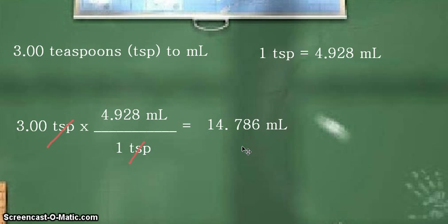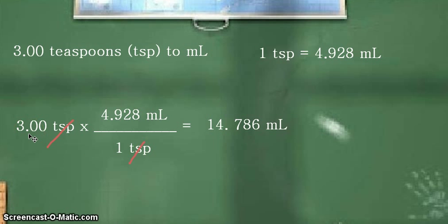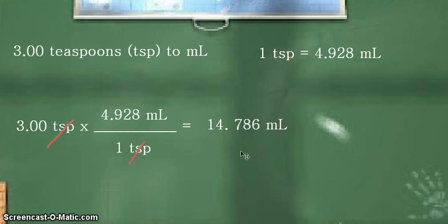Now remember, before you report your final answer, you should always go back to the number of significant figures that were originally given. In our given, we have three significant figures, so our final answer should only contain three significant figures. So we need to do some rounding off here.